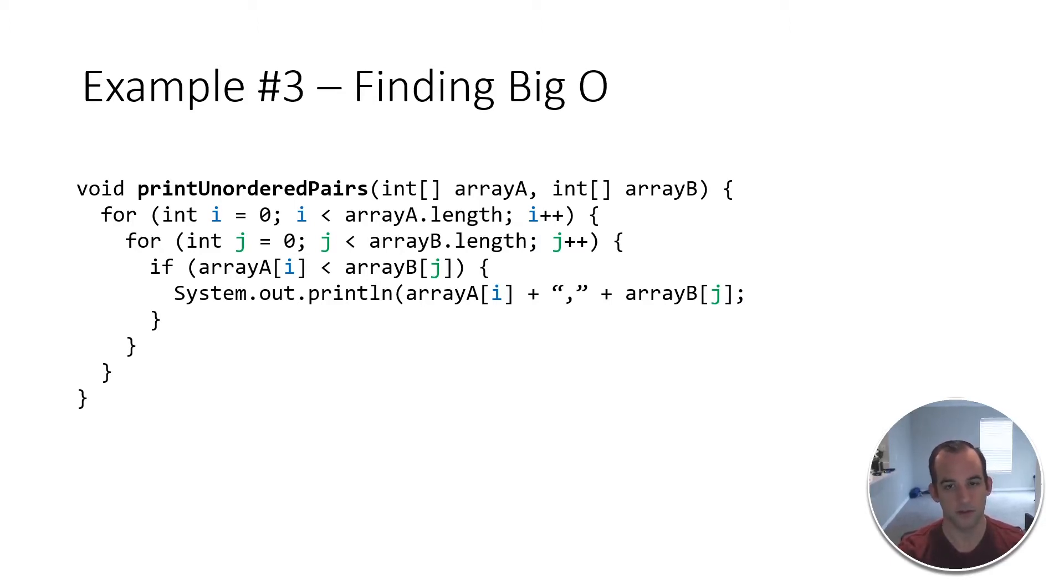So let's go and get the first example. Here we have a single function called printUnorderedPairs. Something to note here is that there's two inputs - we have two different arrays. One thing to look at is what is the input, because it matters. There's two for loops, two nested for loops, and then we have a comparator operation and we're just printing out something. The outer loop is going through all of the first array, the inner loop is going through all of the second array, and then we're comparing if the value at index i is less than the value of index j for each array. And then we're going to print them out if they are.